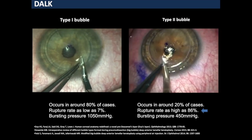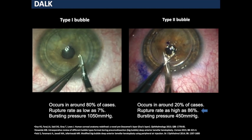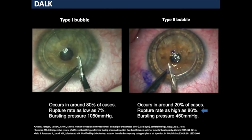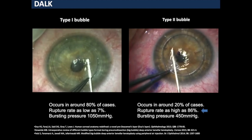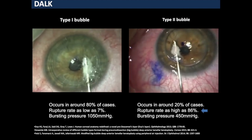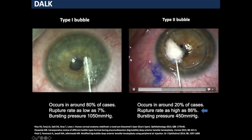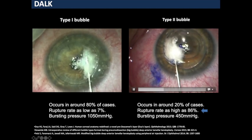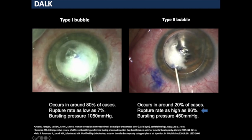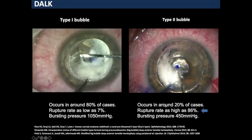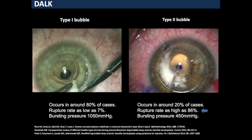A type 1 bubble occurs in around 80% of cases, where you get a separation of the stroma from the pre-Descemet's layer, providing some degree of ocular rigidity. The pre-Descemet's, or Dua's layer, has a bursting pressure of over 1000 mmHg. The bubble typically starts from the center and expands outwards. In contrast, a type 2 bubble is much clearer, starts in the periphery, and then expands inwards, occurring in only around 20% of cases.